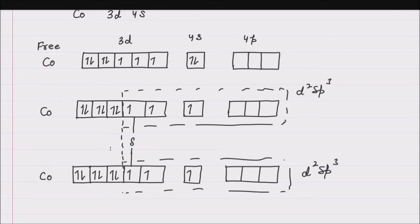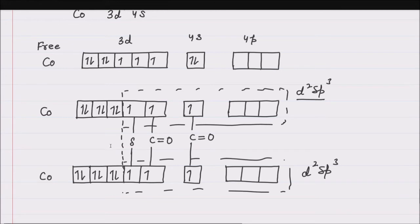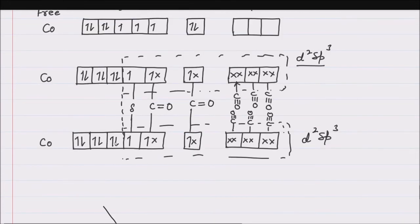After forming the metal-metal bond, two singly filled d²sp³ hybrid orbitals overlap with CO to form the bridging CO groups. Three empty d²sp³ hybrid orbitals on each cobalt overlap with CO to form terminal CO groups via coordinate bonds.